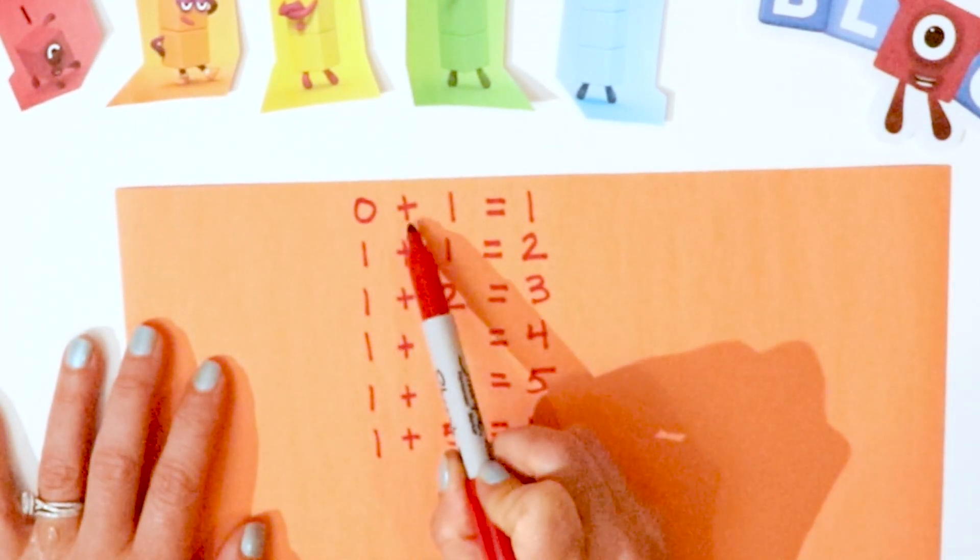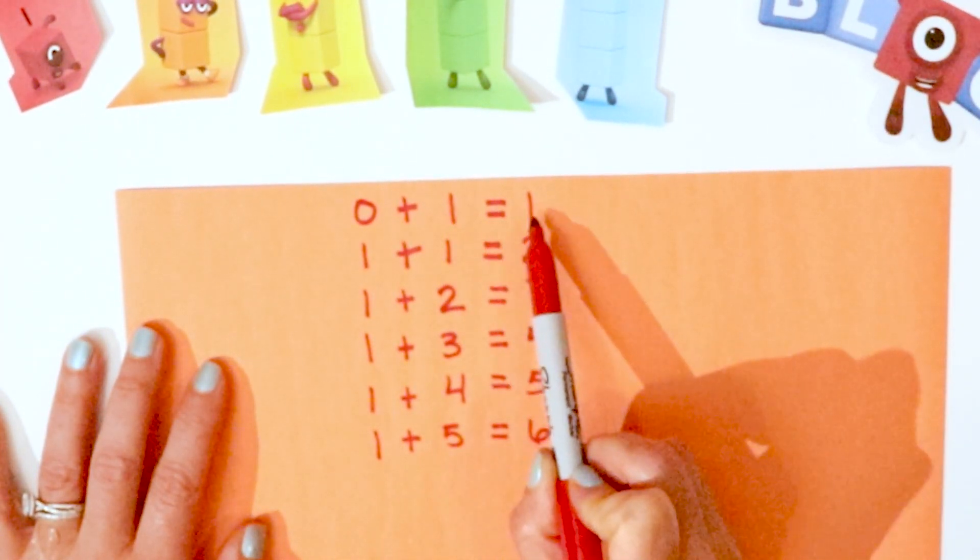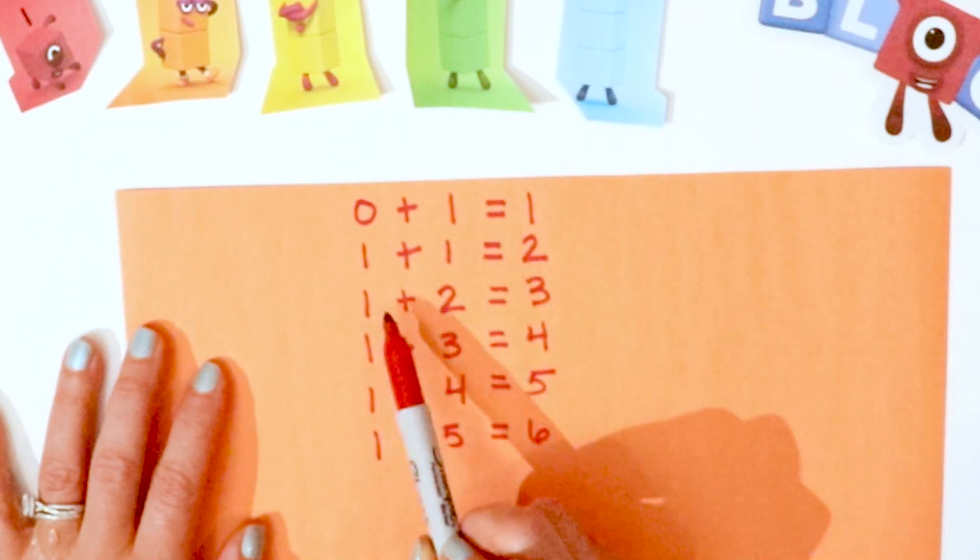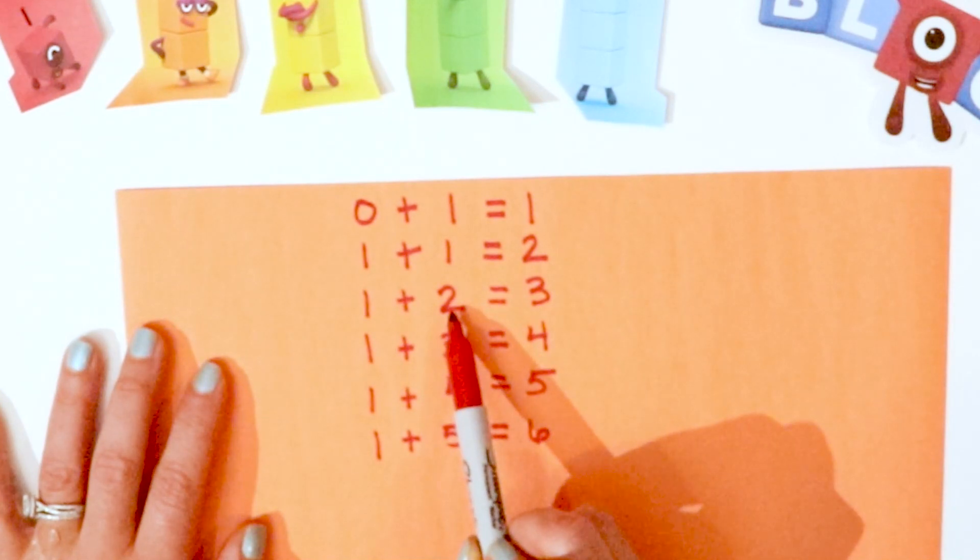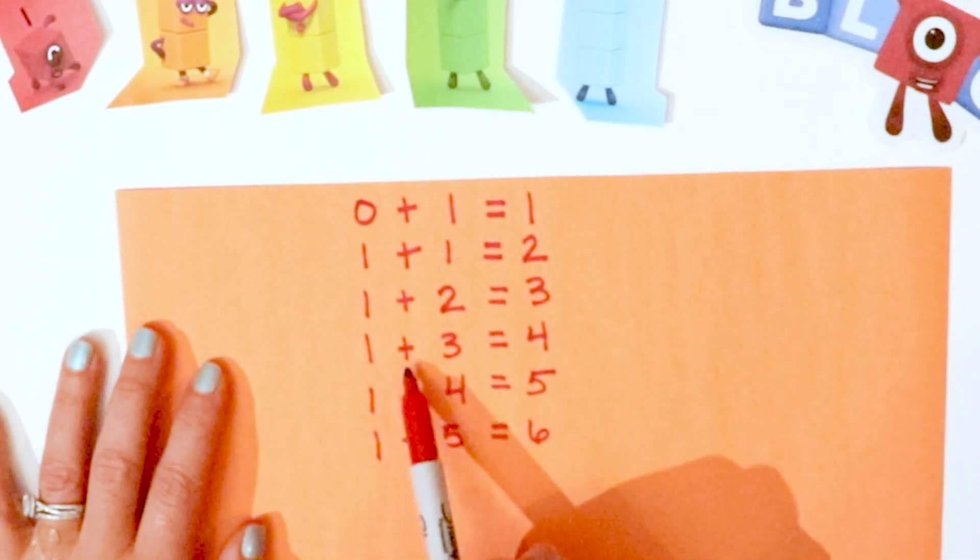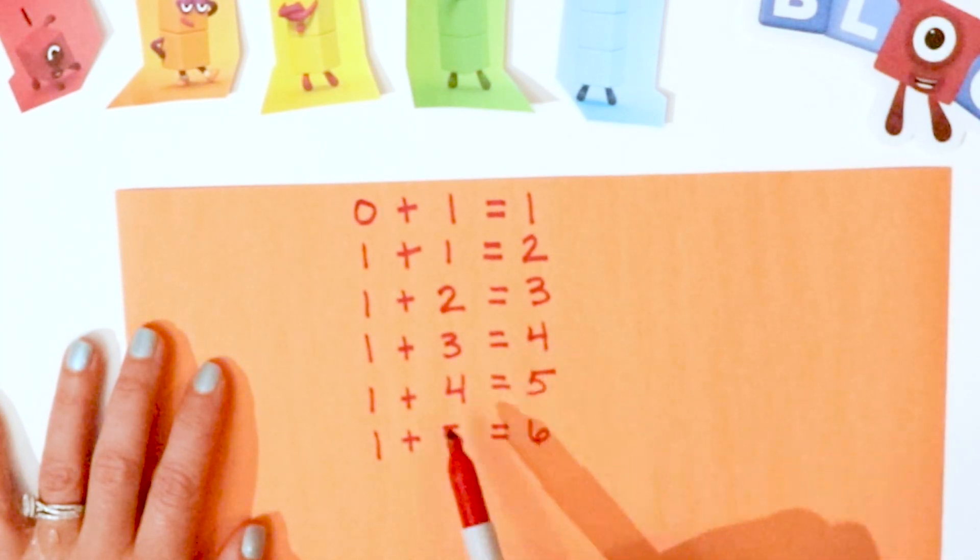Zero plus one equals one. One plus one equals two. One plus two equals three. One plus three equals four. One plus four equals five. And one plus five equals six.